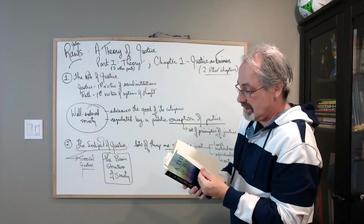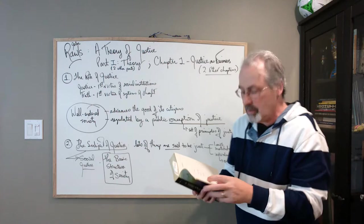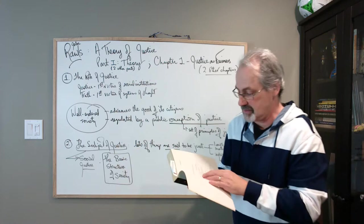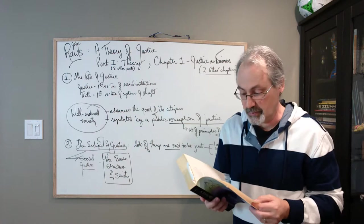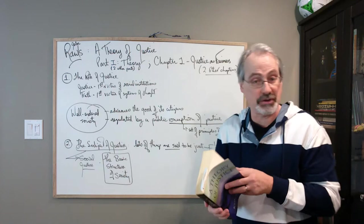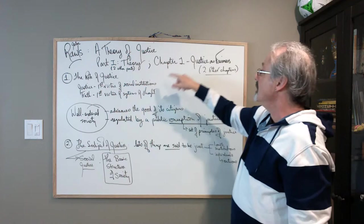The first part, if you have a look at the table of contents, always helpful to do that to get an overview of the book, part one deals with theory. The second part moves from theory to institutions, and then the third part of the book deals with ends. Each of these parts subdivides into a number of chapters, and each chapter subdivides into a number of sections.